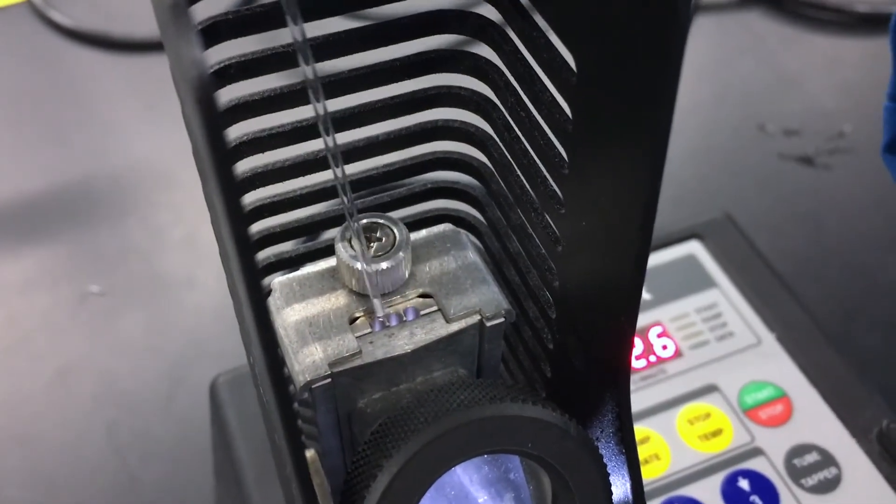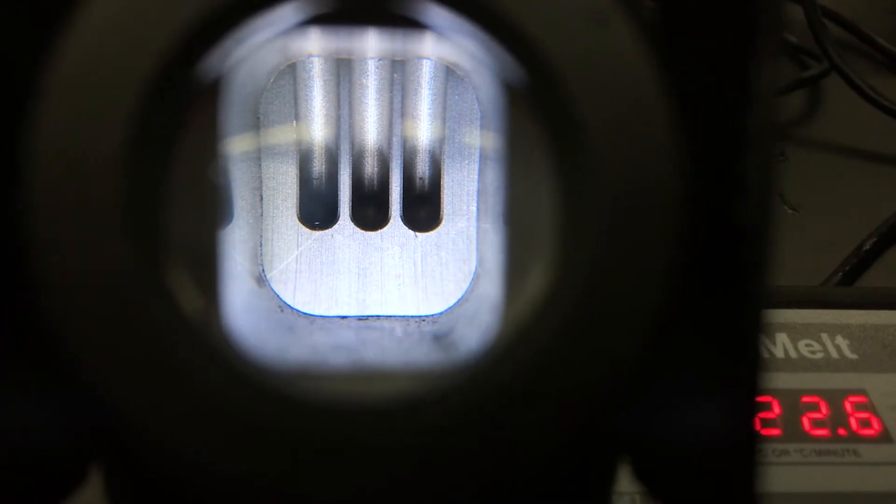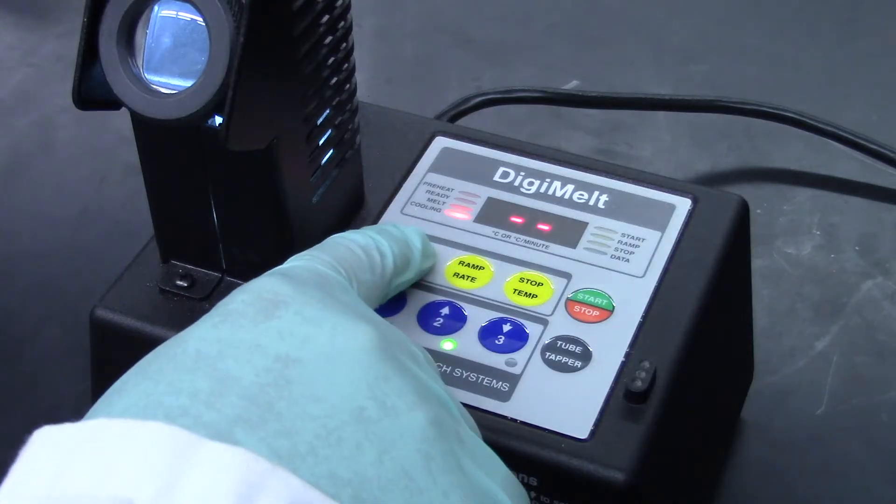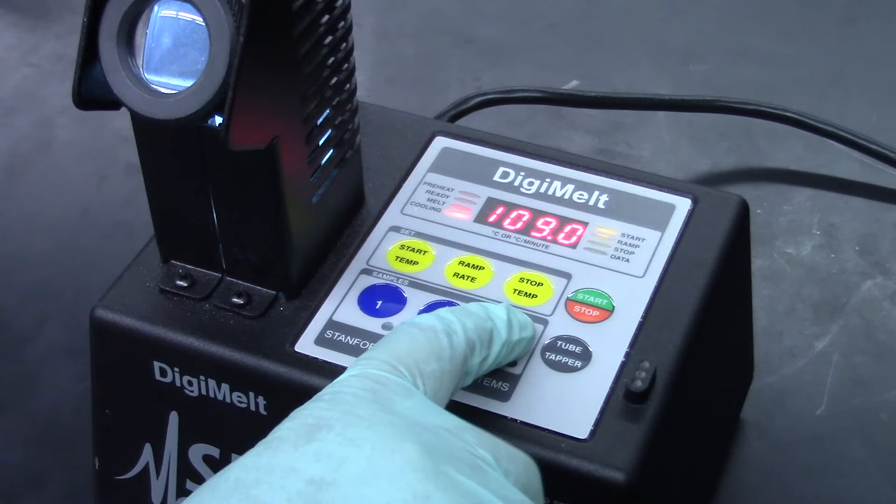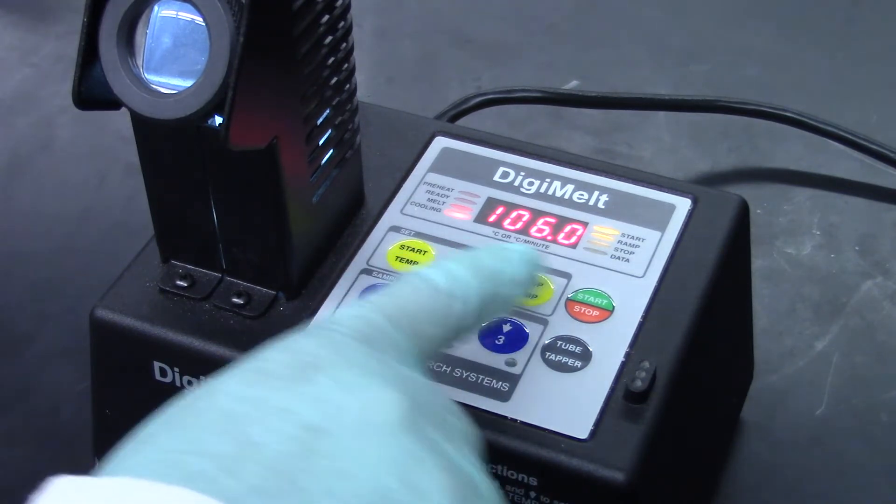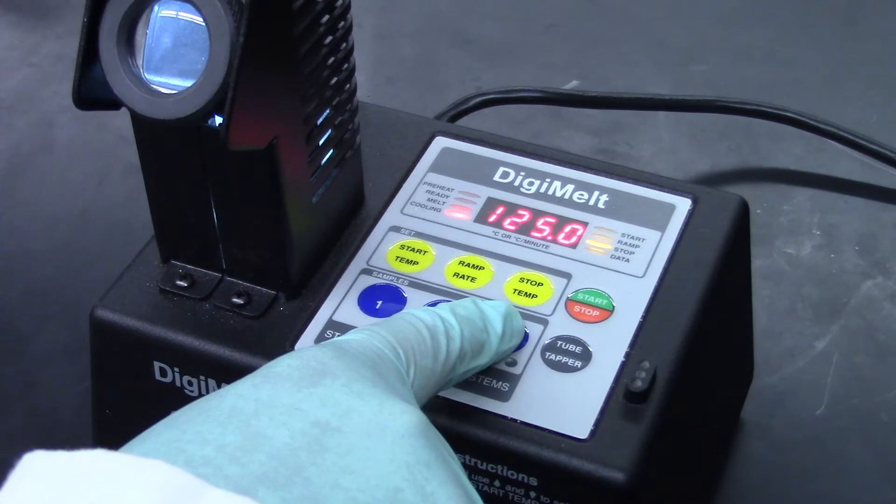When finished, load your capillary tube with the sealed end pointing down into one of the slots just behind the viewfinder window. Make sure that the tube is completely inserted. Set the start temperature to 15 degrees below the literature melting point value, in our case 106 degrees Celsius, and the stop temperature 2 degrees above literature value, thus 125 degrees Celsius.